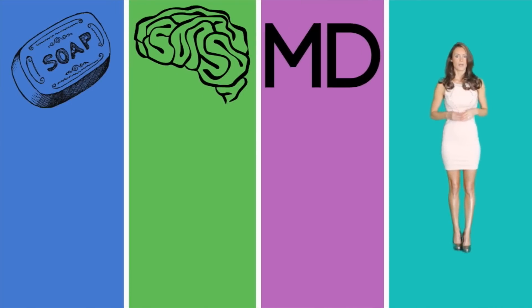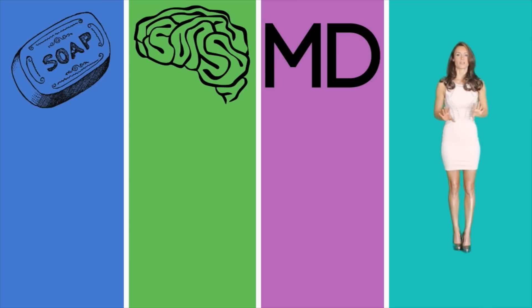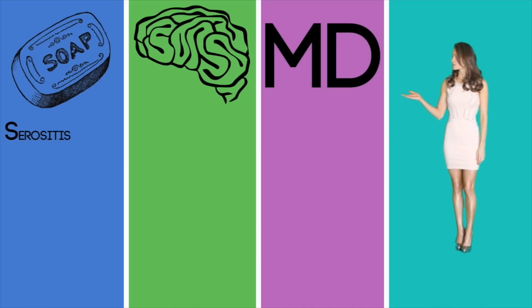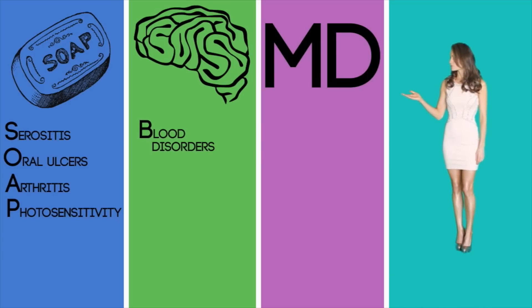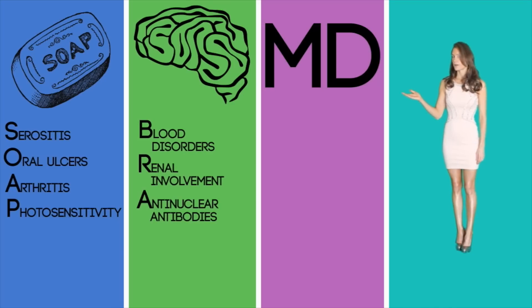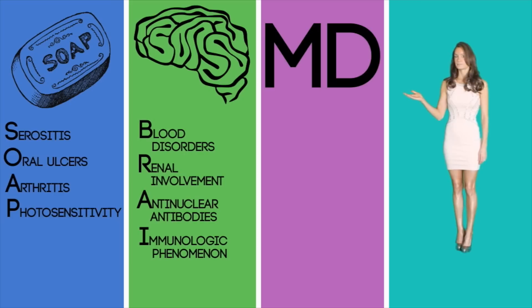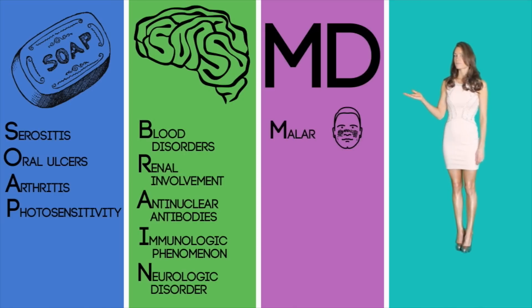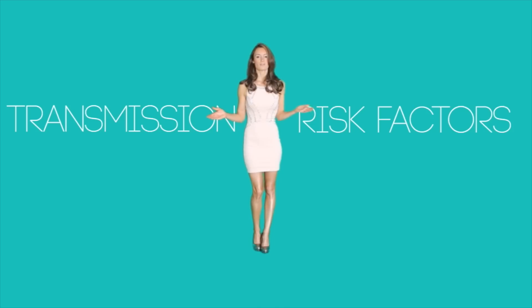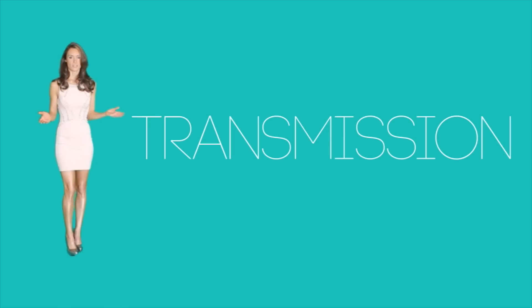Finally, the neurological system can be affected, causing decreased levels of consciousness, seizures, and psychosis. When studying, you can use the mnemonic SOAP BRAIN MD to help remember the clinical manifestations. These are not in order of importance, but will help you remember the main signs and symptoms. SOAP BRAIN MD stands for: Serositis, Oral ulcers, Arthritis, Photosensitivity, Blood disorders, Renal involvement, Anti-nuclear Antibodies, Immunologic phenomenon, Neurologic disorders, Malar rash (butterfly rash), and Discoid rash.